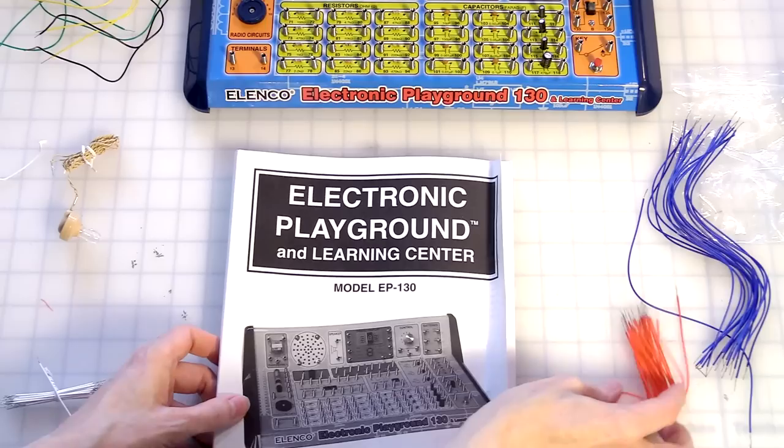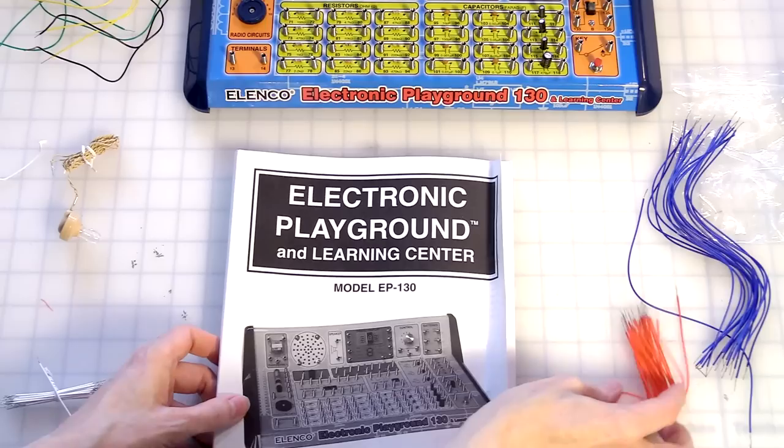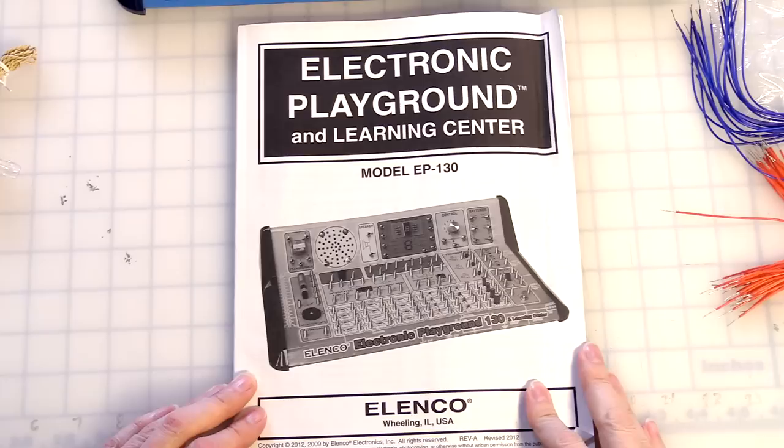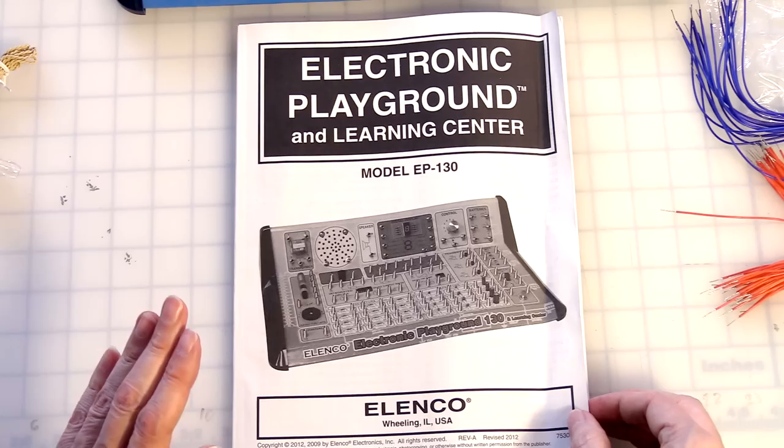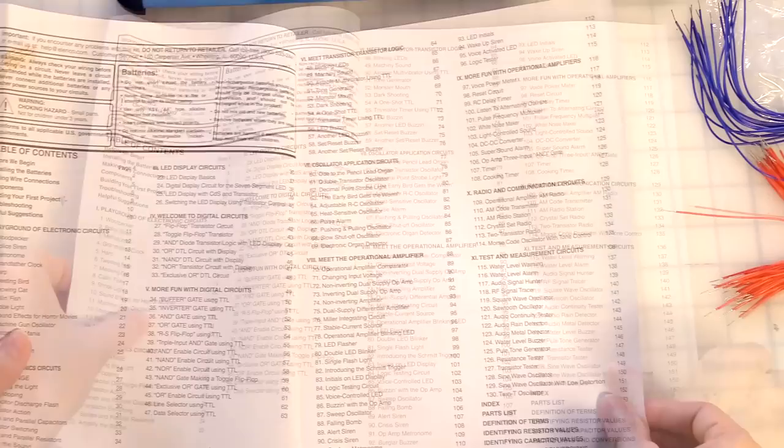And a couple of long black wires. And we've got a bundle of short white wires. Okay. So let's take a look at the book.